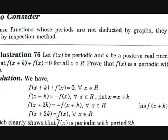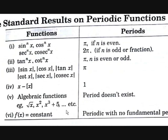This means f(x) is periodic with period 2k. Now let's look at some standard results on periodic functions — specifically the periods of standard functions. Let's start with sin^n(x), cos^n(x), sec^n(x), and csc^n(x).